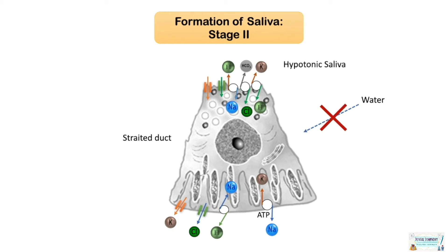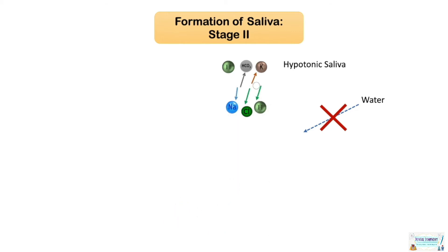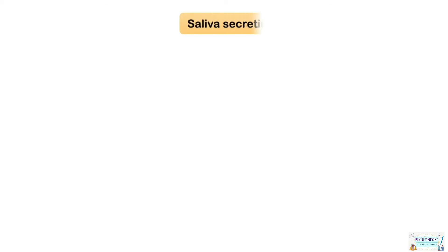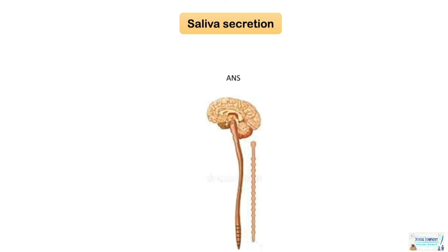The clinical significance of this stage is that a genetic mutation in the cystic fibrosis gene alters chloride and other channels in the salivary gland, and can lead to the array of symptoms found in cystic fibrosis. A number of factors control the quality and quantity of saliva secreted.